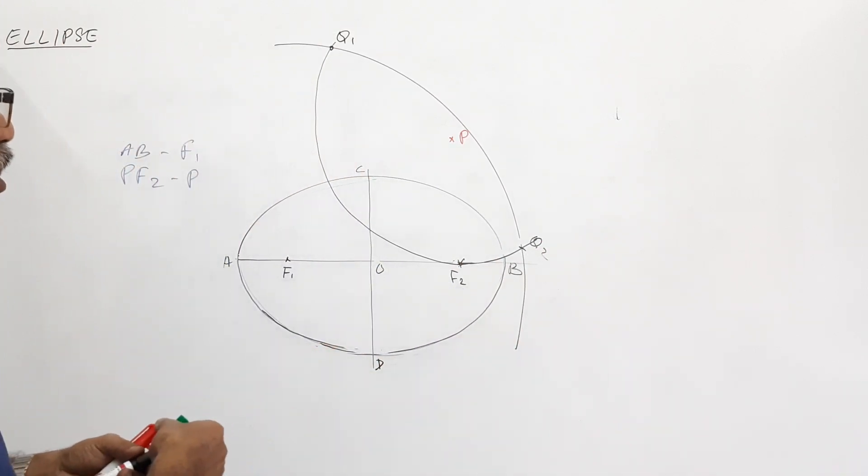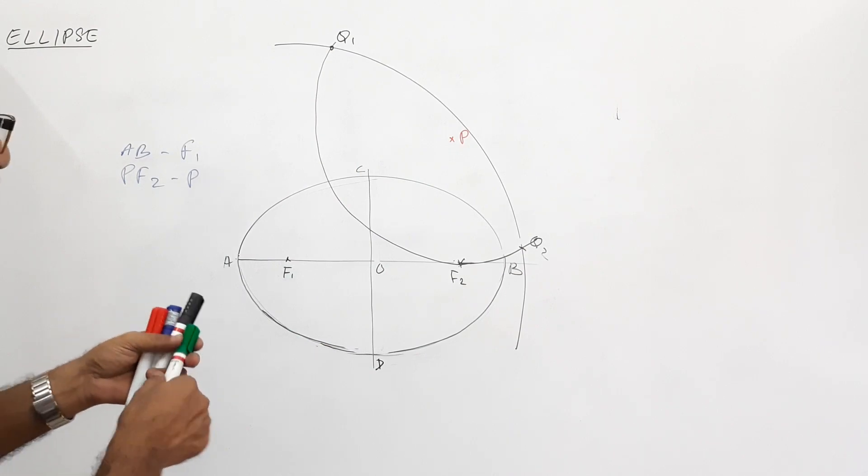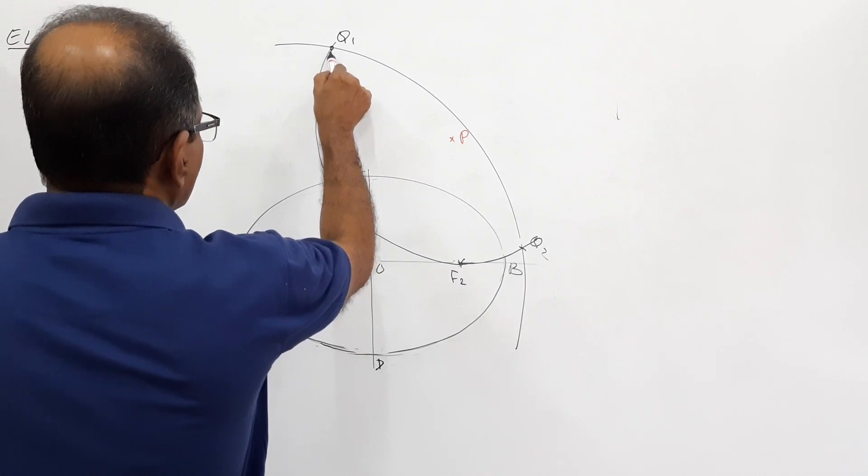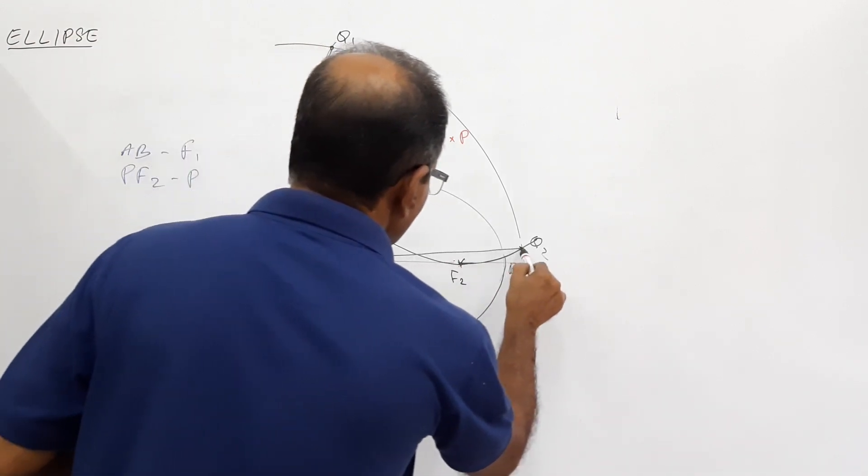Now, join F1 to Q1 and Q2. This is F1. Join F1 to Q1. Join F1 to Q2. What do you get? You get two lines or two points on the ellipse.